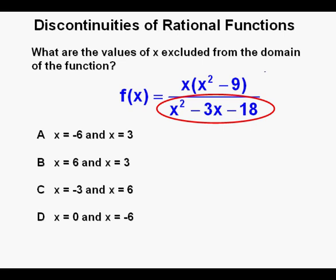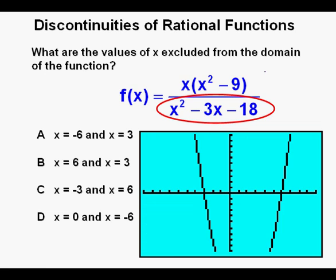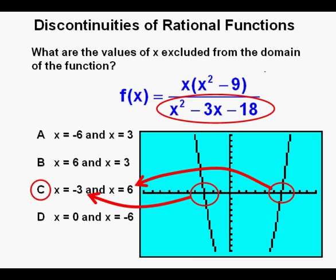Instead of factoring, we'll solve by graphing. We put the denominator into the function editor as y equals x squared minus 3x minus 18 and graph it. We see solutions at x equals negative 3 and at x equals 6, which appear in the answer choices, making C the correct answer.